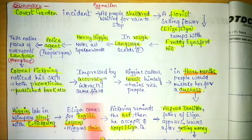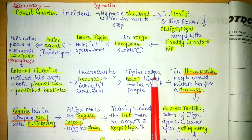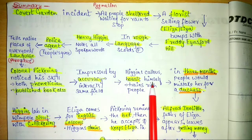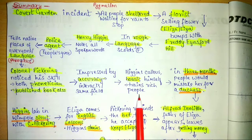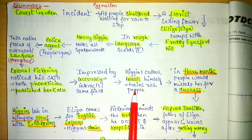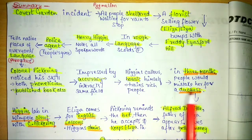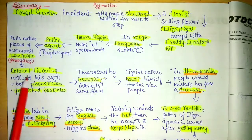Pickering became very impressed by the accuracy of Henry Higgins in analyzing native places through phonetics. Both being in the same field, they interacted. Higgins was a very callous person — boastful and very proud of his caliber. He said that his job was to train rich people, as it was Victorian England where etiquette was given great importance, though it was superficial — just to attract people and be the center of a crowd.